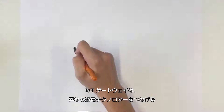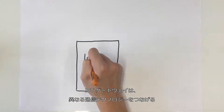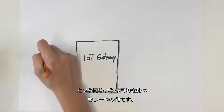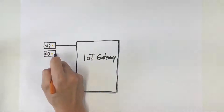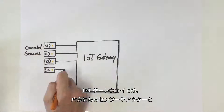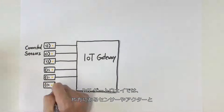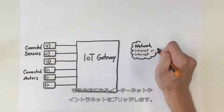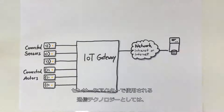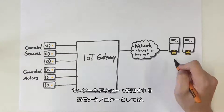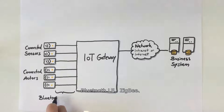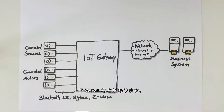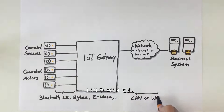The IoT gateway is another example, following the same primary purpose of connecting different communication technologies. The IoT gateway builds the bridge between sensors and actors on the one hand and the Internet or an intranet on the other. Examples of communication technologies used by sensors and actors are Bluetooth LE, Zigbee, and Z-Wave. The other side of the communication in IoT gateways is local or wide area networks.